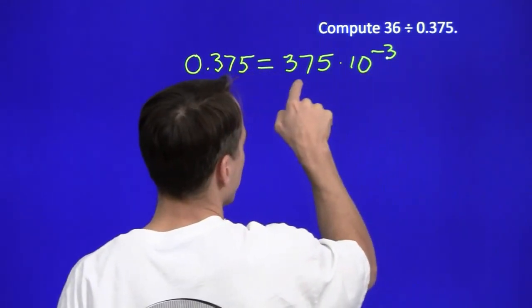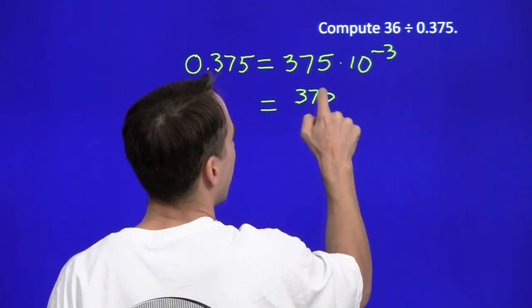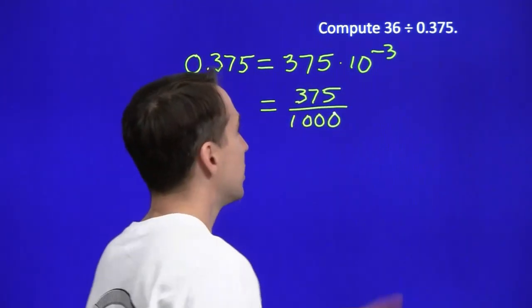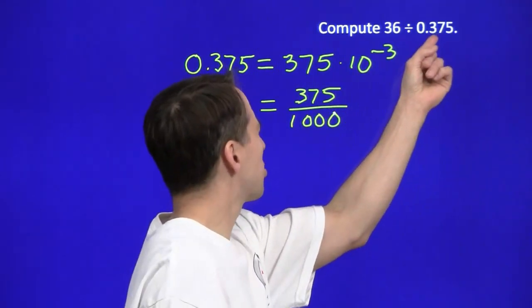So this is 1 over 1,000. So this is going to be 375 over 1,000. This is 375 thousandths. So we could have probably gone straight from here to here.